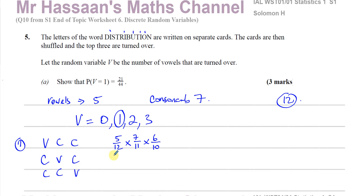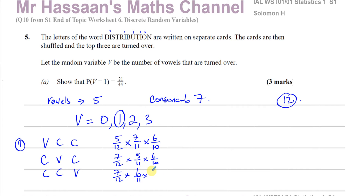For consonant-vowel-consonant, it would be 7/12 × 5/11 × 6/10. For consonant-consonant-vowel, it would be 7/12 × 6/11 × 5/10. Notice the numerators 5, 7, and 6 appear in every case — just in different orders — and the denominators are always 12, 11, 10. The product is the same in all three cases, so I can take one case and multiply by 3: that gives 3 × (5/12 × 7/11 × 6/10).